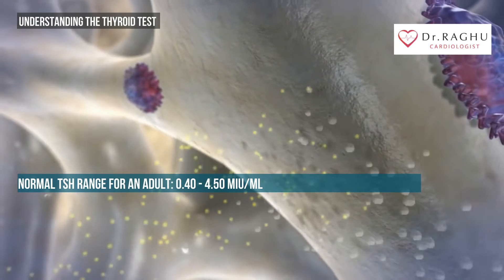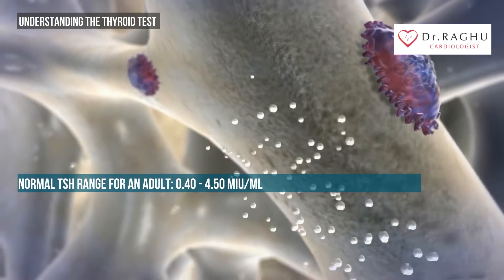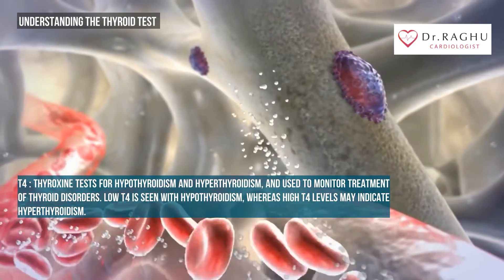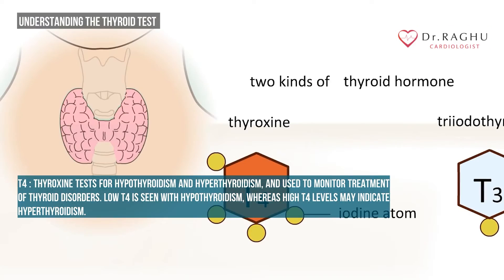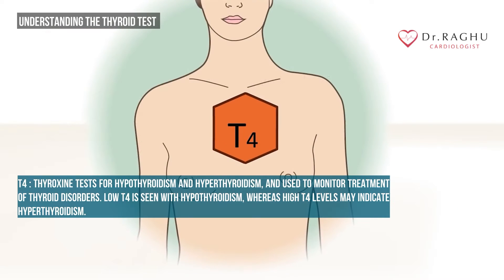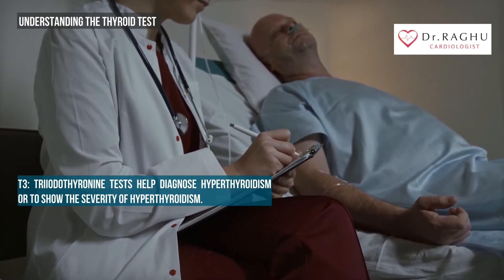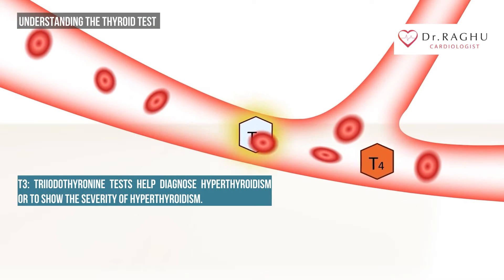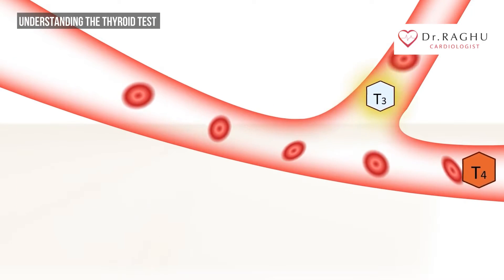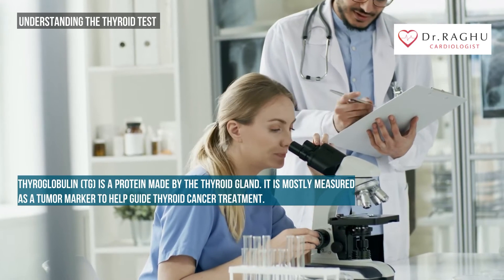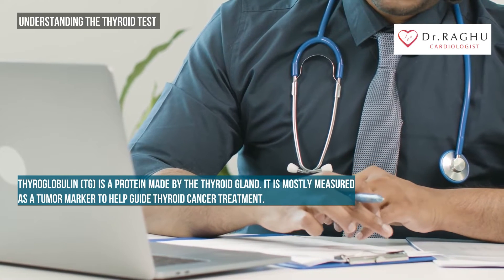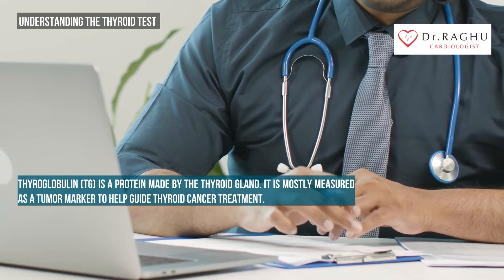The normal TSH range for an adult is 0.40 to 4.50 milli-international units per liter of blood. T4 (thyroxine) tests for hypothyroidism and hyperthyroidism and are used to monitor treatment of thyroid disorders. T3 (triiodothyronine) tests help diagnose hyperthyroidism or show the severity of hyperthyroidism. Thyroglobulin is a protein made by the thyroid gland, mostly measured as a tumor marker to help guide thyroid cancer treatment.